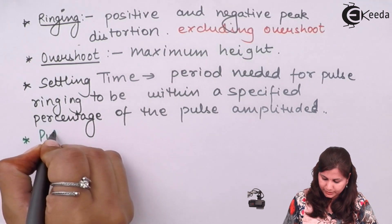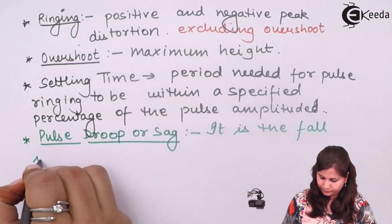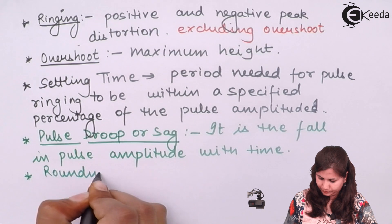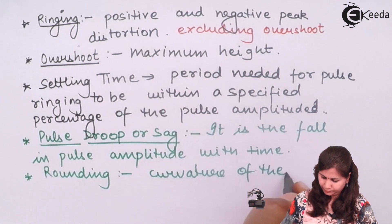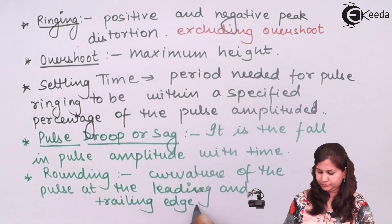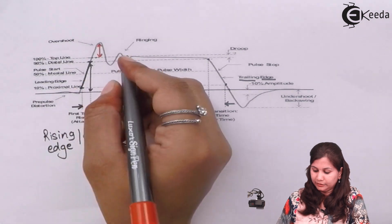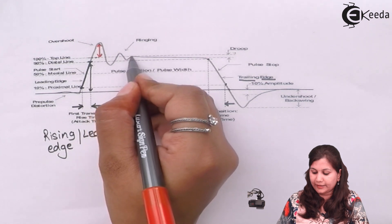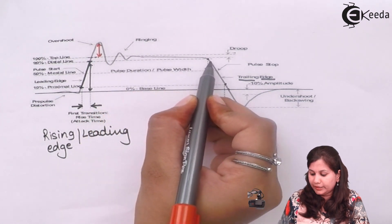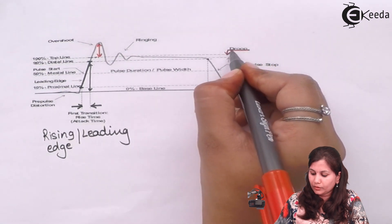Pulse droop is defined as the fall in the pulse amplitude with time. You can see that the pulse first increases then starts decreasing with time after reaching its last peak — this fall in amplitude with time is called the droop.